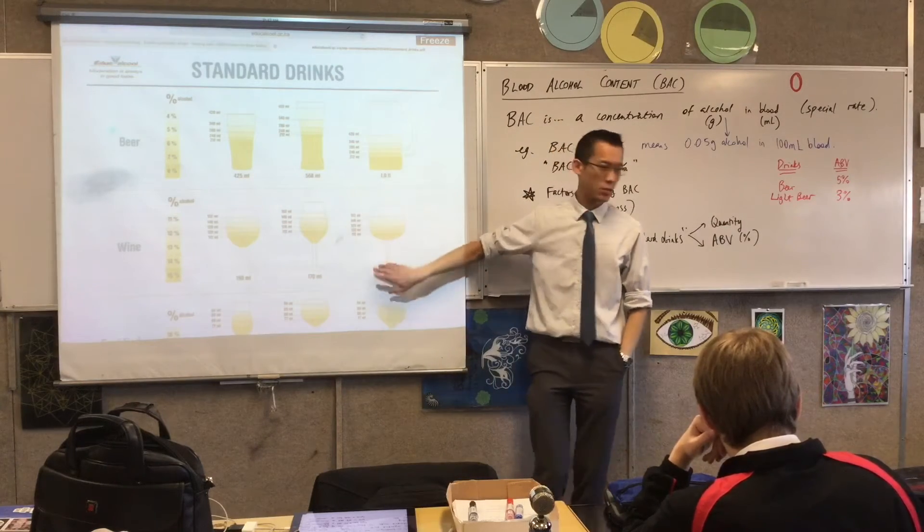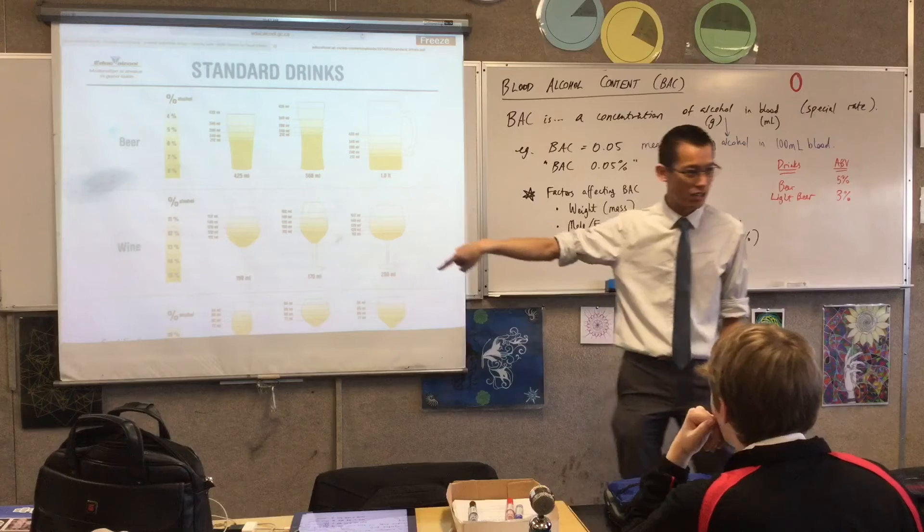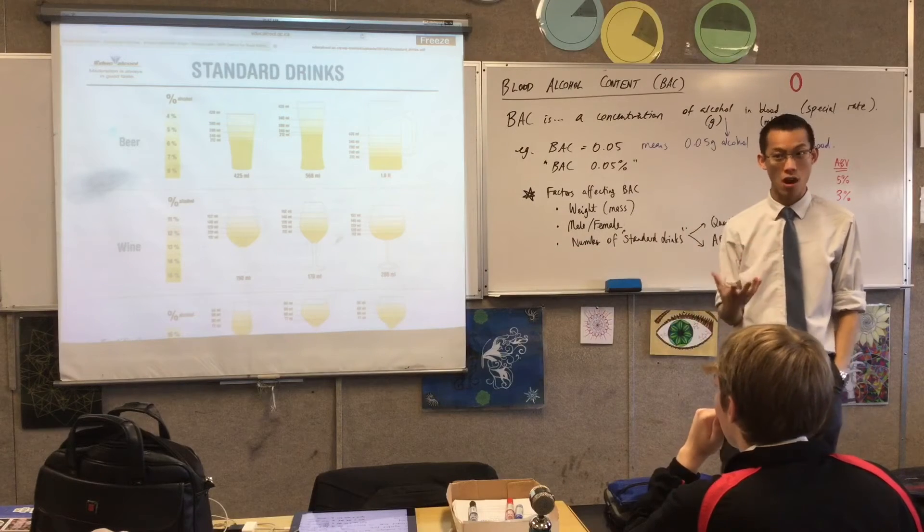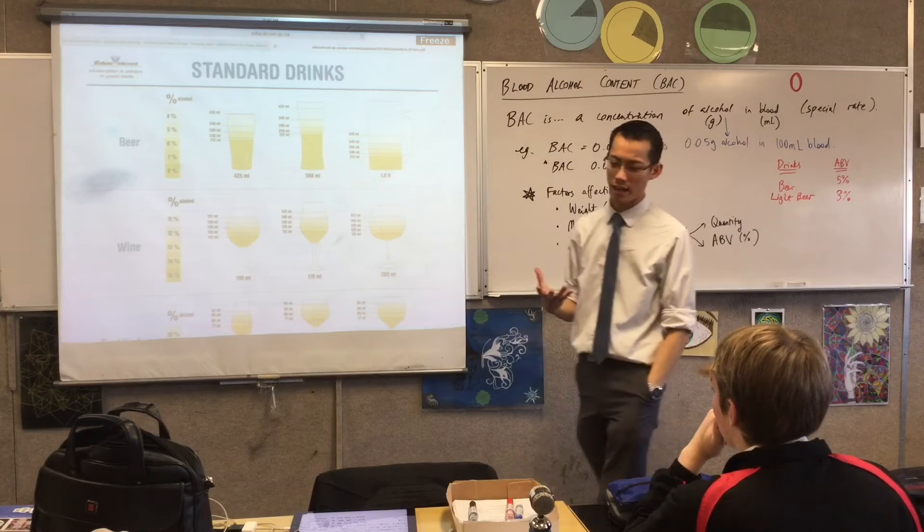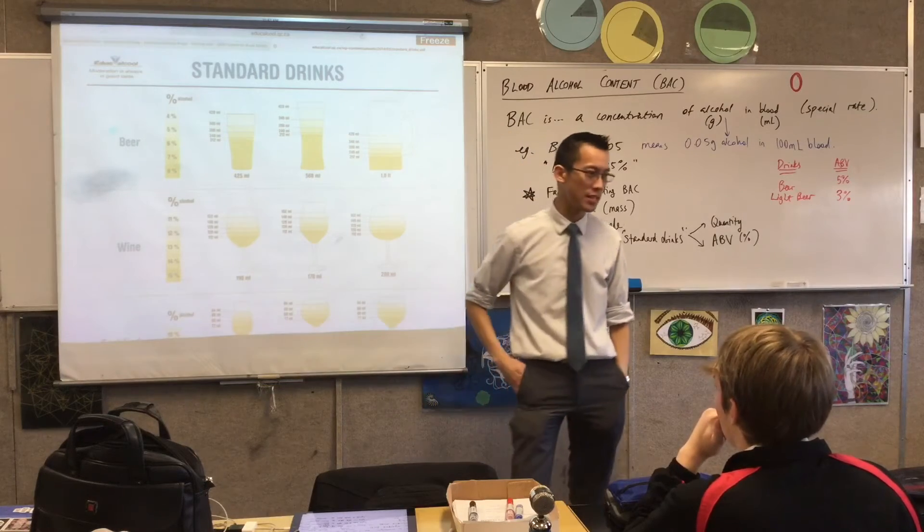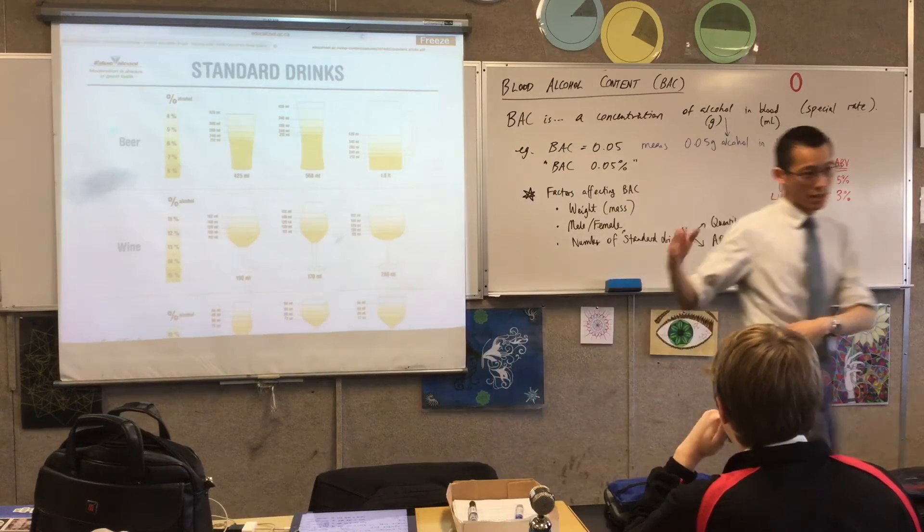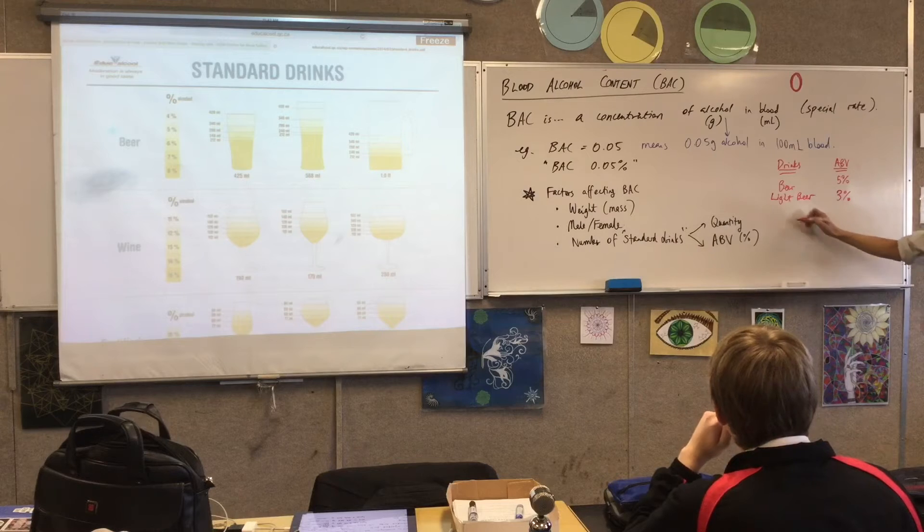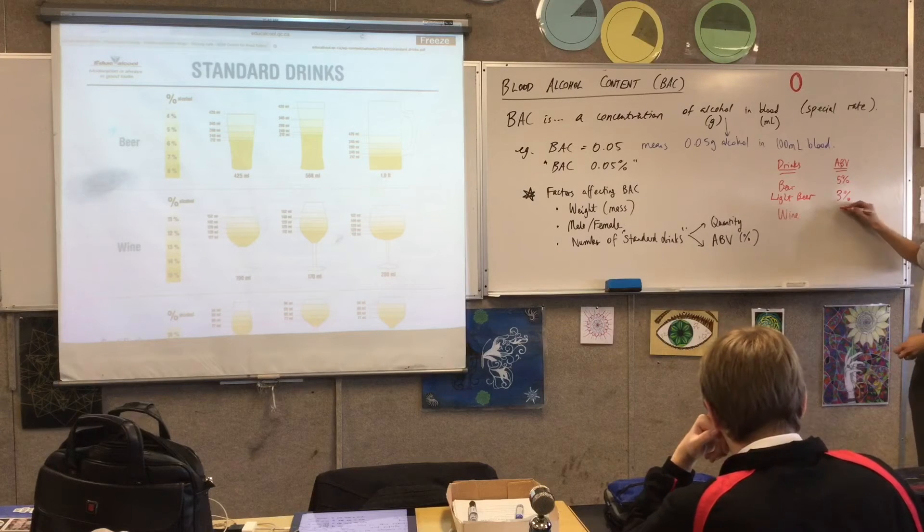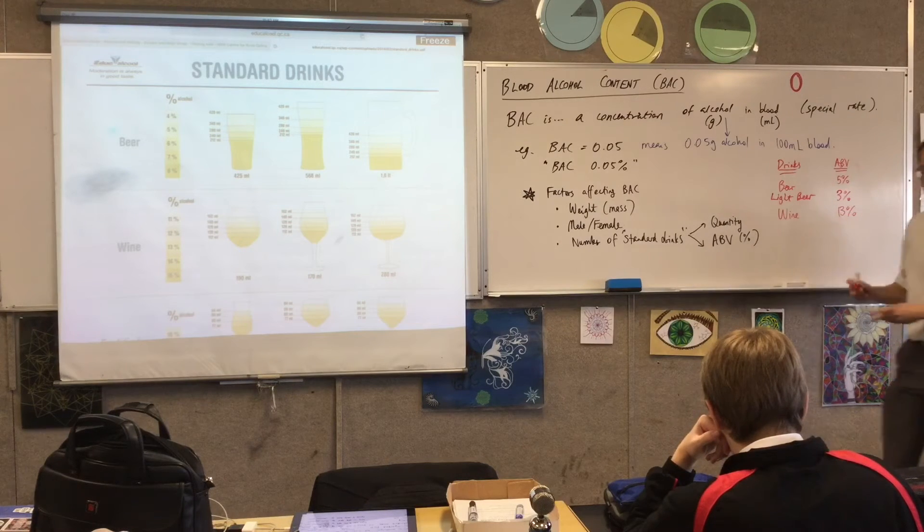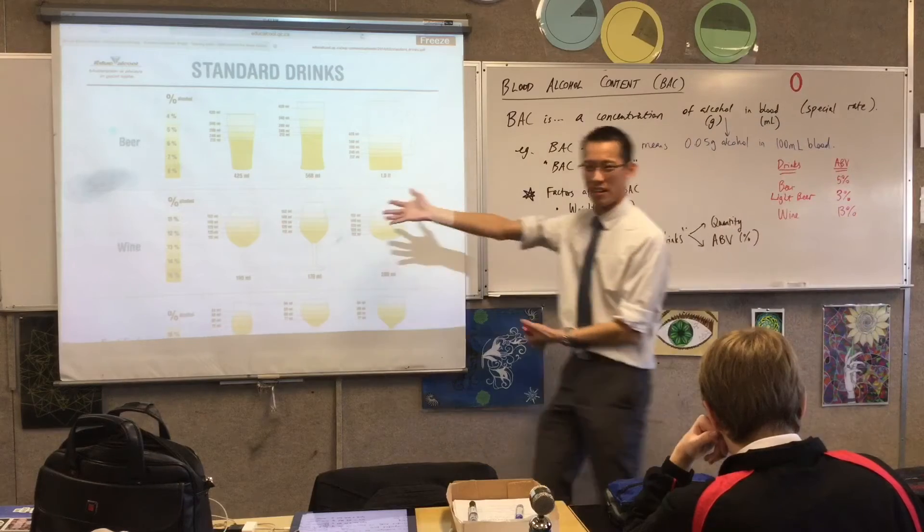And, you can then see, your next grade up is wine. Now, have a look at the percentages that are listed there. You see how they're so much higher? Like, they're more than double. The number, when I was researching, approximately the median, I'll write this down, the median ABV for wine is about 13%.